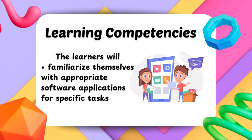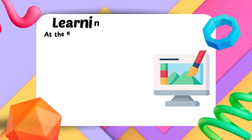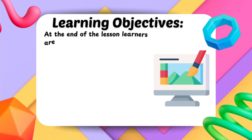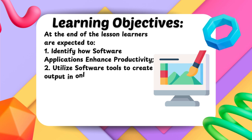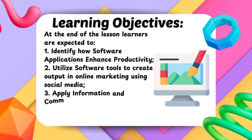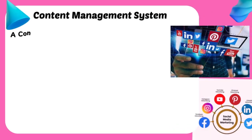Learning objectives: at the end of the lesson, learners are expected to — one, identify how software applications enhance productivity; two, utilize software tools to create output in online marketing using social media; three, apply information and communications technology (ICT) tools to enhance the digital presence and engagement.